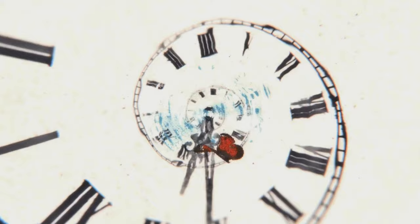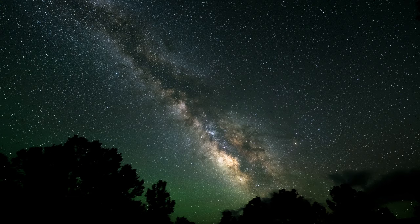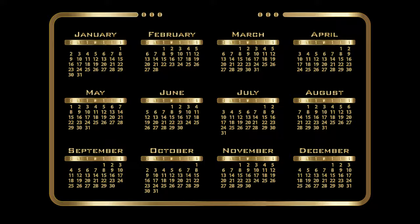Our cosmic calendar is a unique way of visualizing the history of our entire universe by compressing the 13.8 billion years since the Big Bang into a single Earth year starting on January 1st. Imagine that everything that has ever happened in the entire universe has been compressed into a single Earth year, with January 1st being the Big Bang and the end of the year being present day.